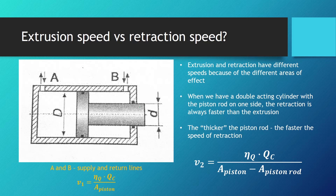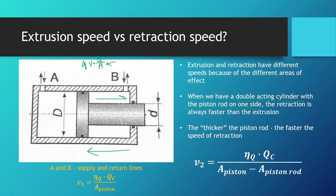In the case where the return line is not connected to the supply line, the speed of the piston in the retraction phase should be higher, because we have a smaller effective area. Since speed equals flow divided by area, if the area in the denominator is smaller, speed is bigger. So for a double acting cylinder with a piston rod on one side, retraction is always faster than extrusion when flow is constant. We can see the equations for retraction speed and extrusion speed in this picture.